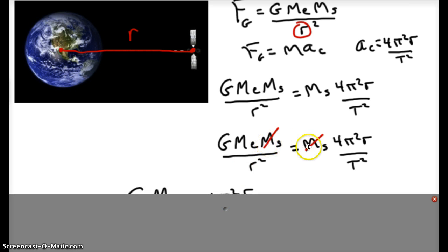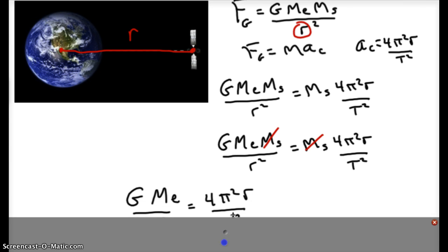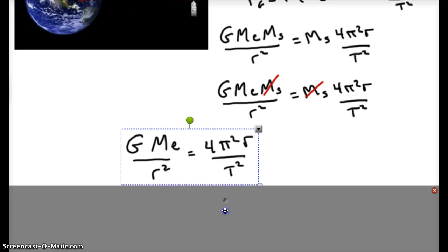Notice that the mass of the satellite, which is the object being accelerated, drops out. And what we're left with to find our unknown r is simply a restatement from the algebra here of the above equation.